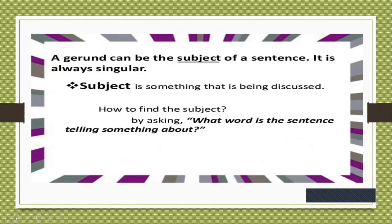A gerund can be the subject of a sentence, and it is always singular. The subject is something that is being discussed. The basic structure of a sentence is subject, verb, and object. You identify the subject by asking what the sentence is telling something about — who is the performer of the action. For example, 'I write a letter' — who is writing a letter? 'I' is the subject. In the same way, you are going to identify the gerund.